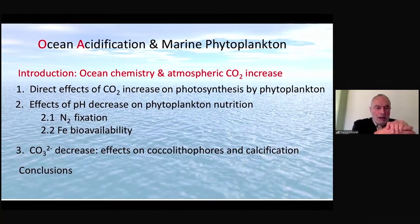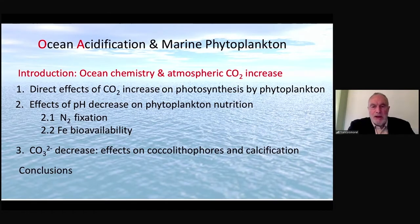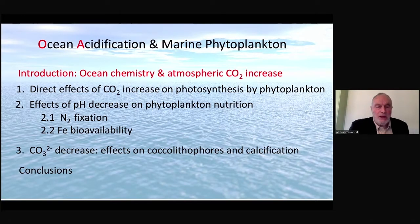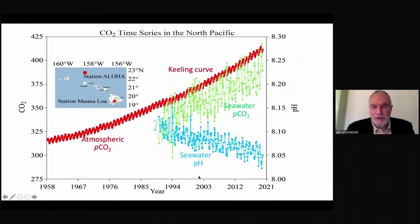I'll start with the introduction of the chemistry of atmospheric CO2 increase. Then I'll go on to talk about the effects of the CO2 increase on photosynthesis by phytoplankton, the primary production of the ocean. Then I'll talk a little bit about the effect of pH decrease, to do with N2 fixation and the iron bioavailability of the ocean. And finally, I'll talk about the carbonate effect on the calcification of coccolithophores.